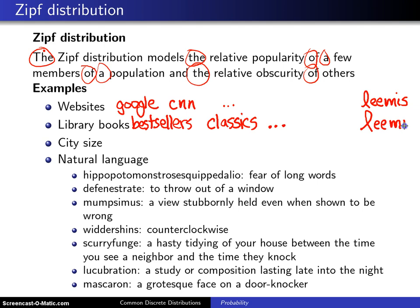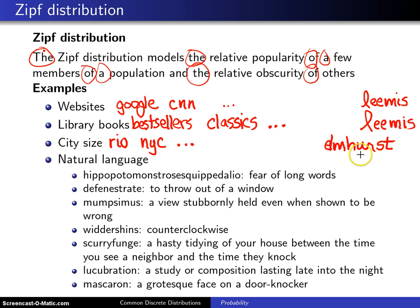Another example is city size. There are a few very large cities — Rio de Janeiro, New York City, Paris, etc. — and there aren't many of these. However, there are many, many small towns, such as Elmhurst, Illinois, where the speaker grew up. There are a lot of these small towns and not many large cities.